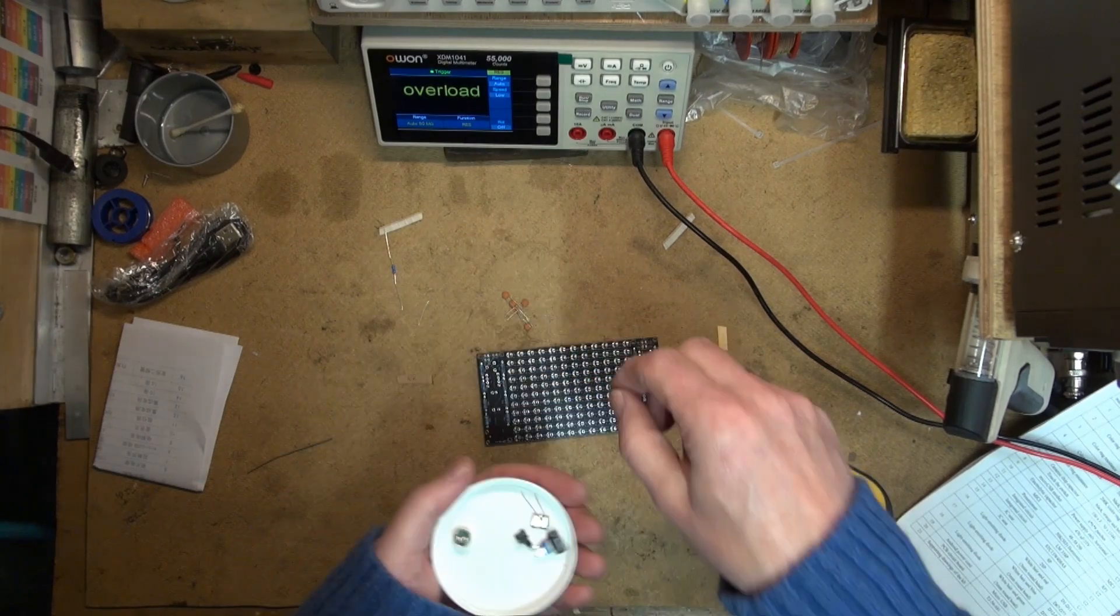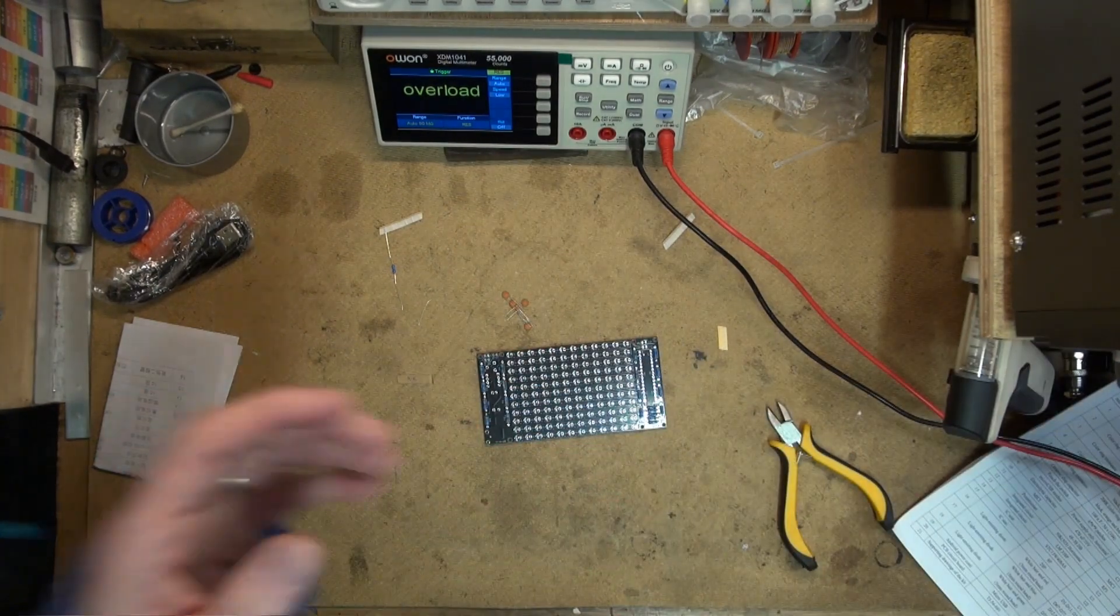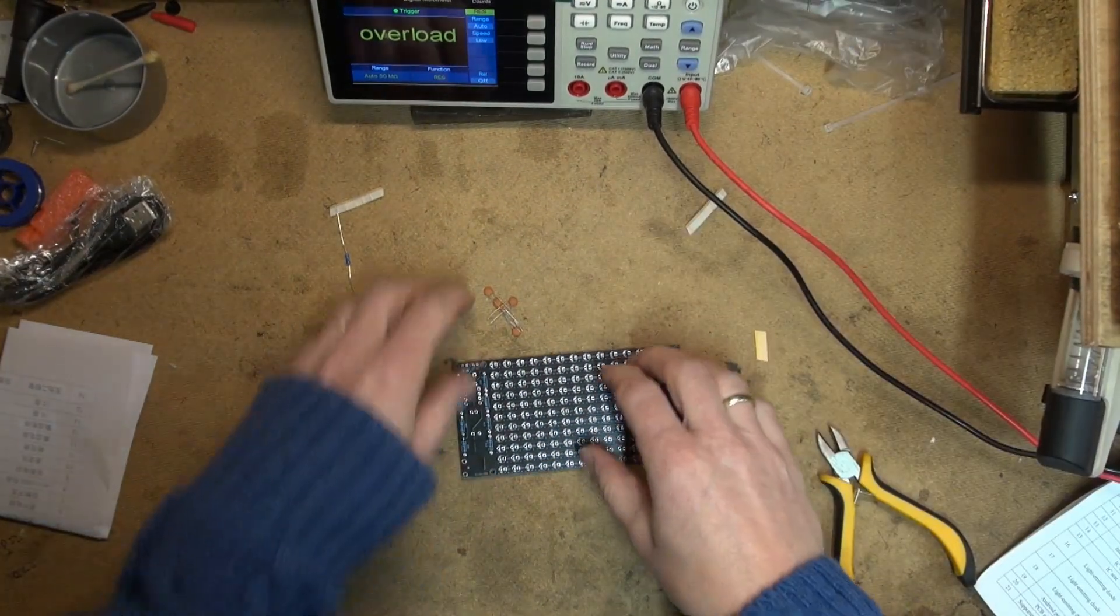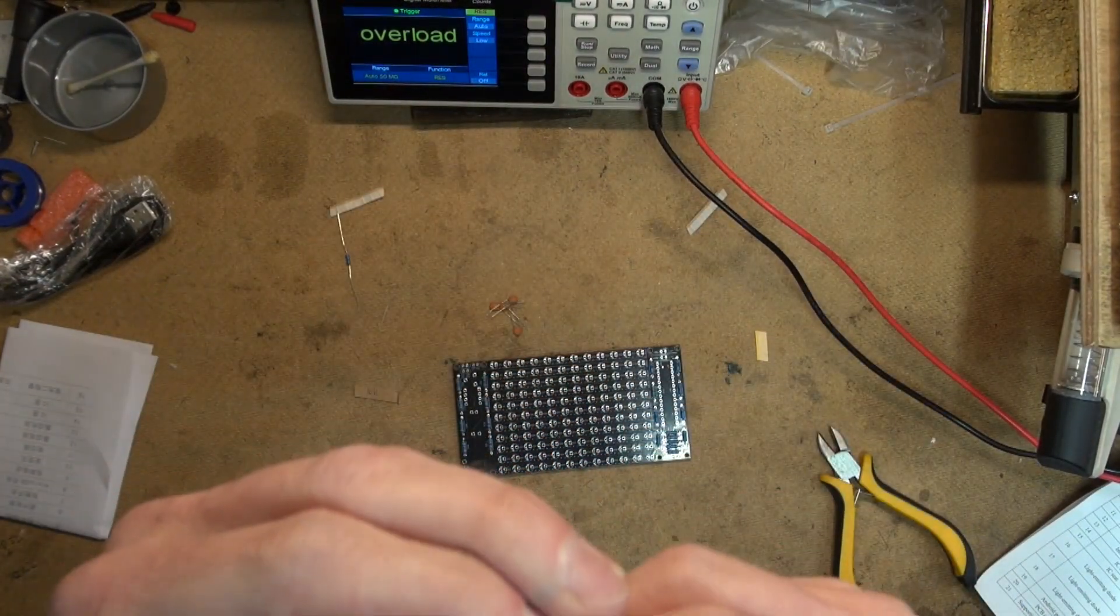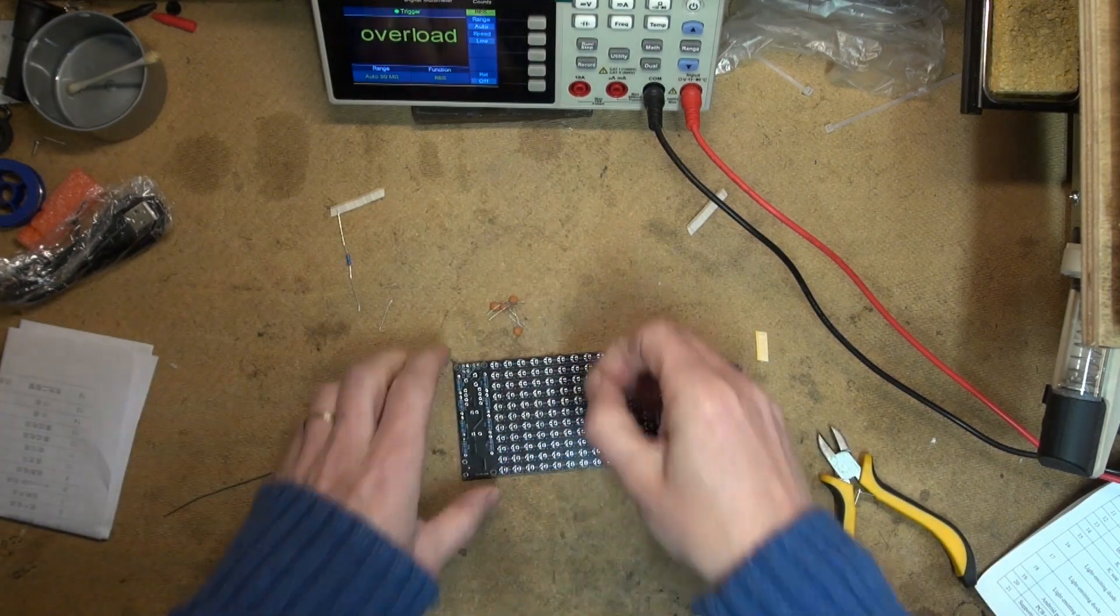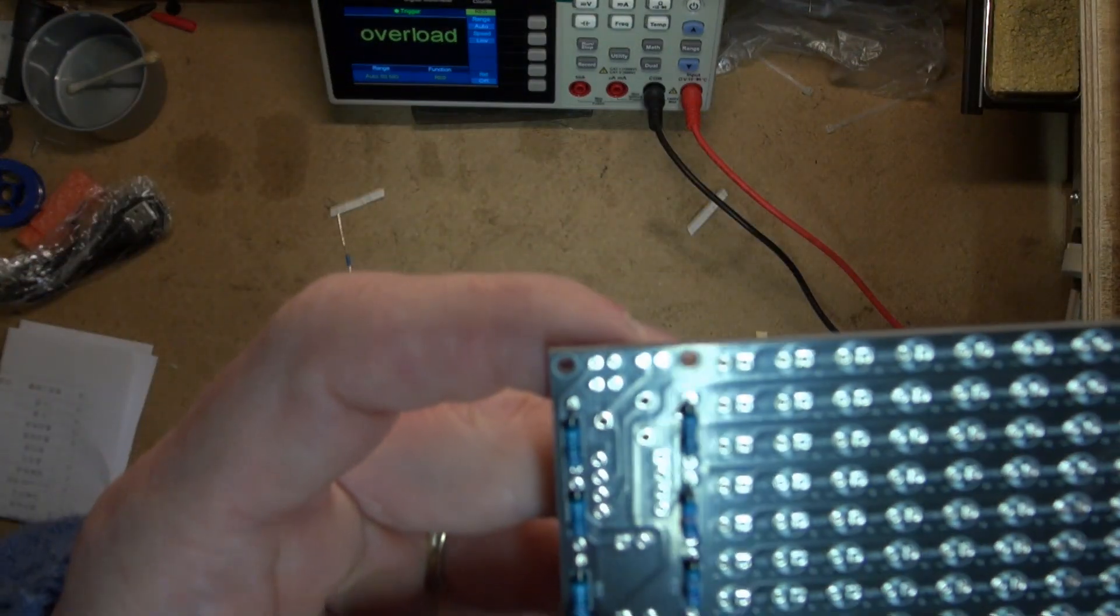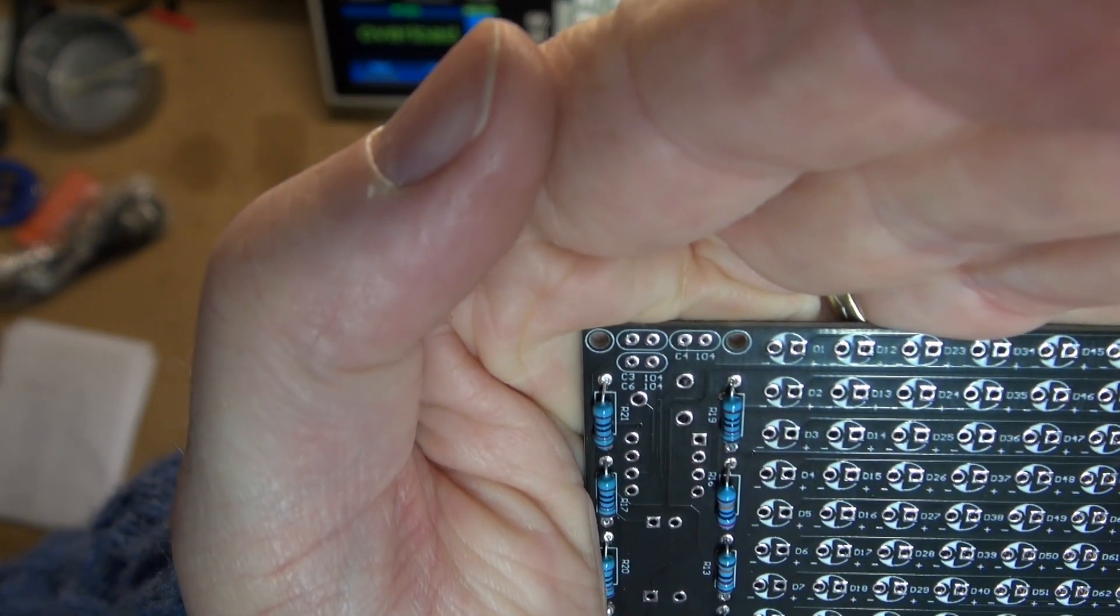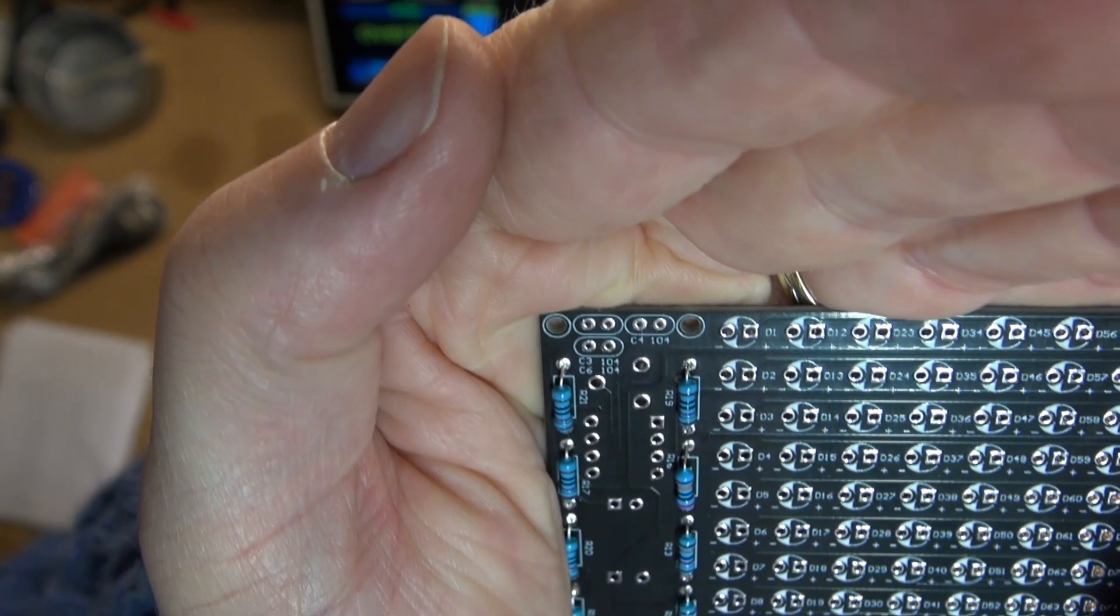Up next are the ceramic capacitors. They need to come in. We zoom in a little bit more. And they have the value written on them. And it's also neatly printed over here in this corner. Camera wants to focus on the top there. You can see on the left top corner there. 104, 104 Farad.